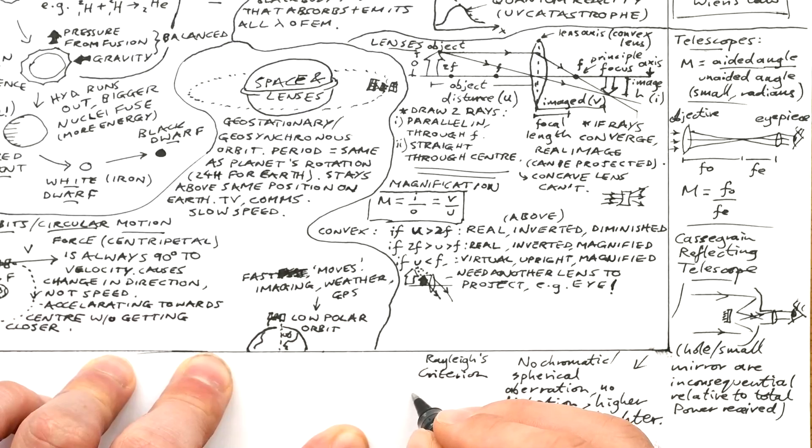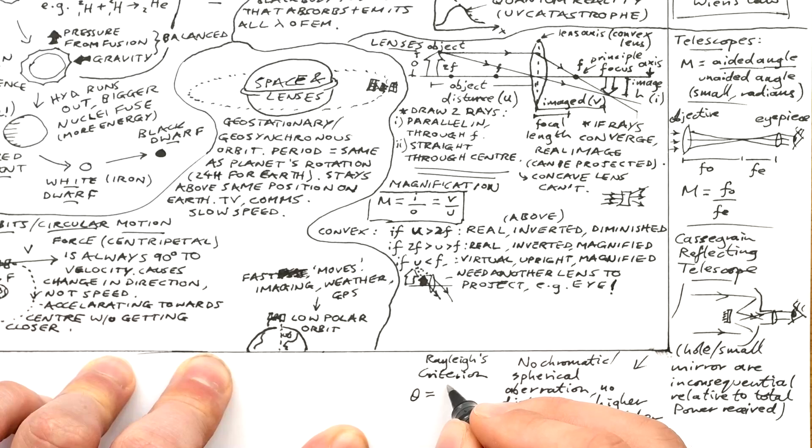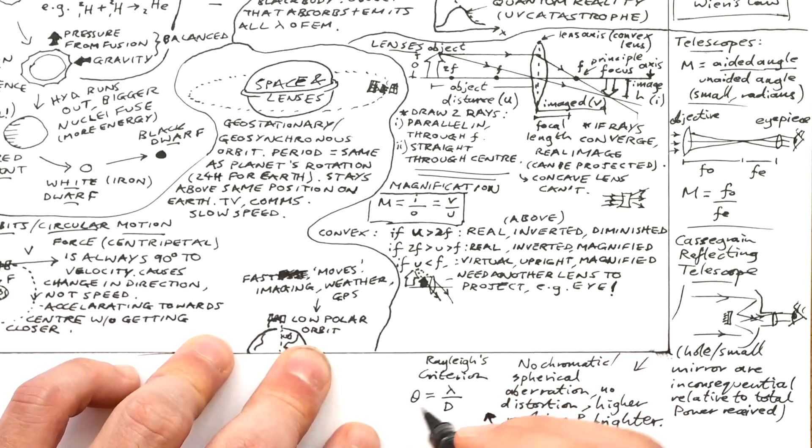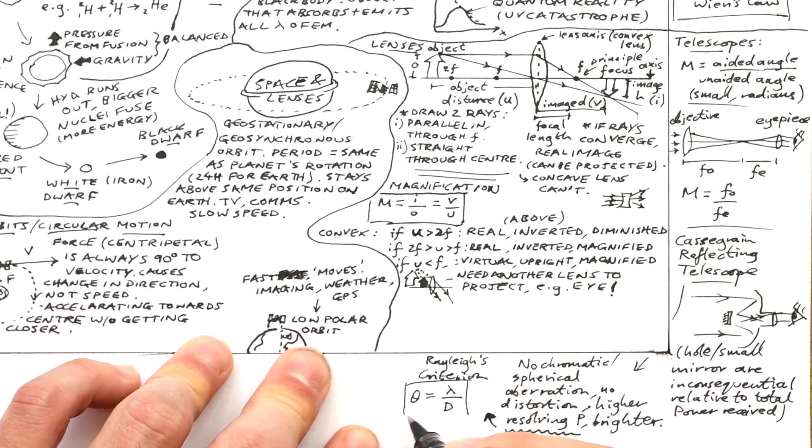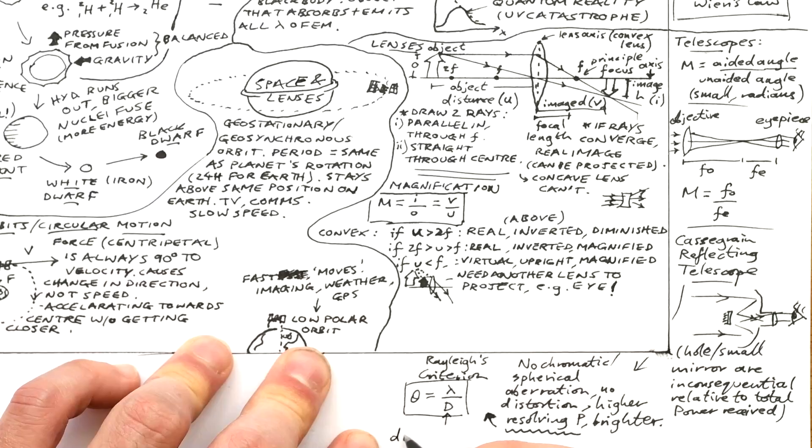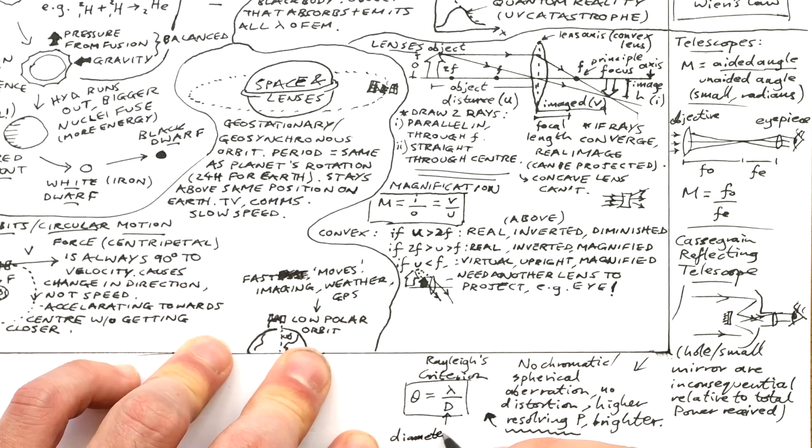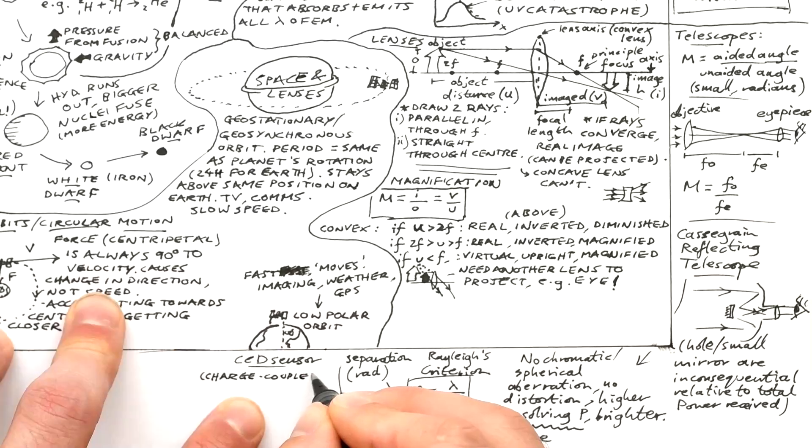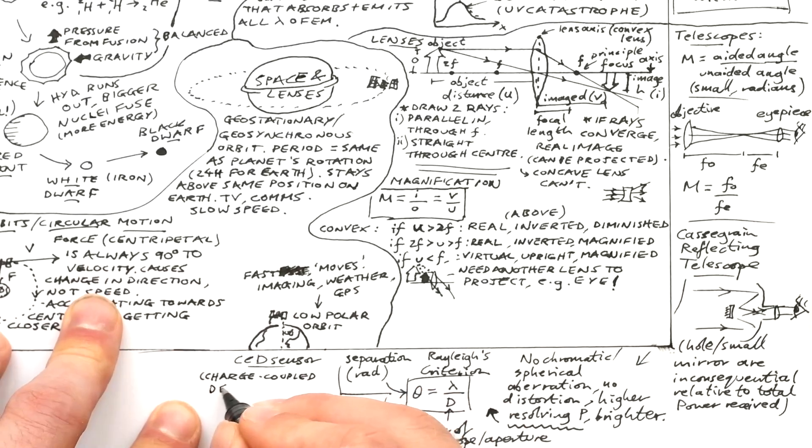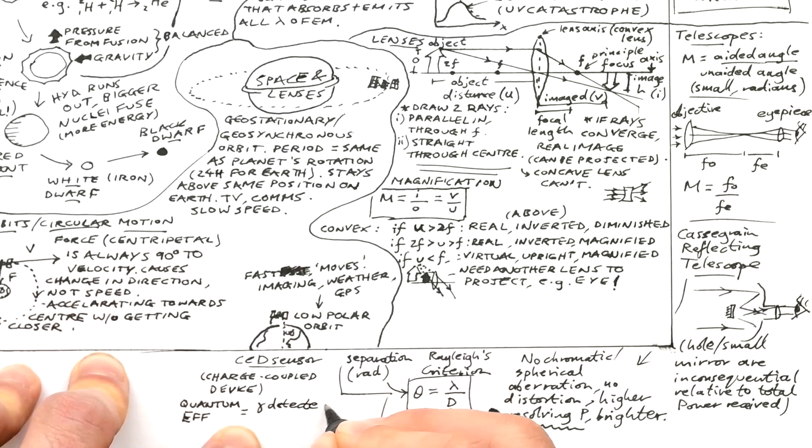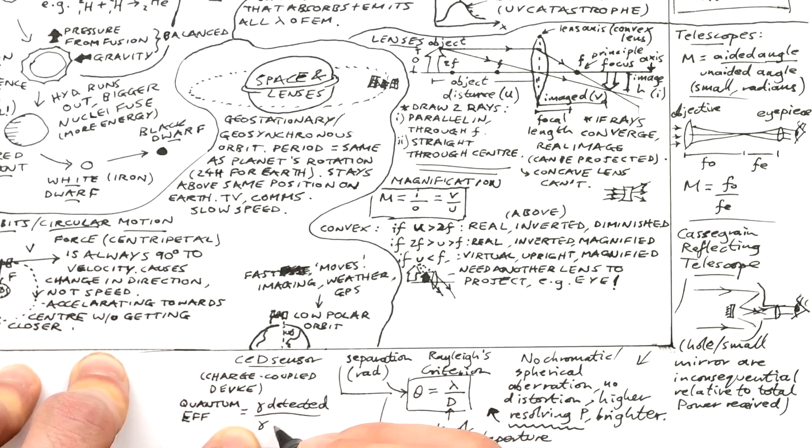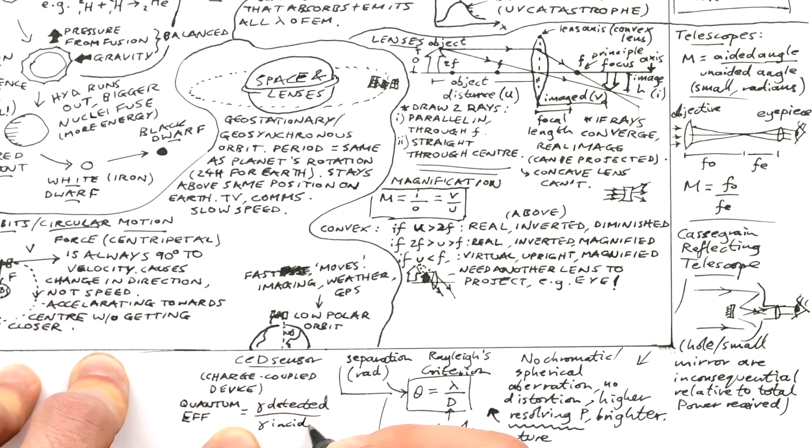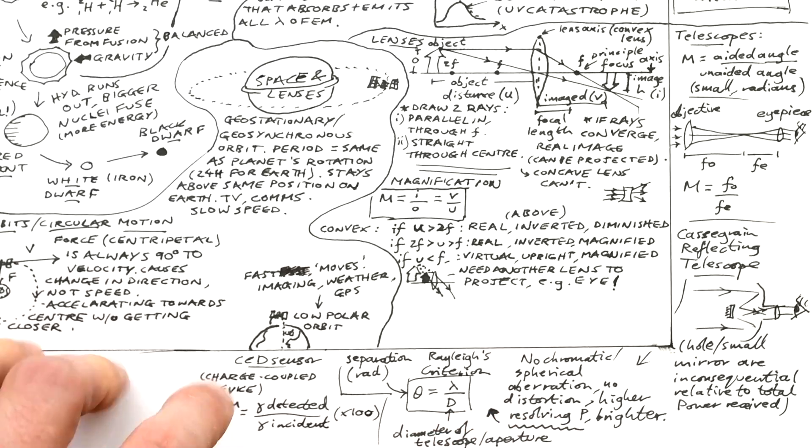Speaking of resolving power this indicates how good a telescope is at distinguishing between two objects. And so we can also think of it as resolution in terms of angles. This is given by Raleigh's criterion. Theta in radians is equal to the wavelength of light divided by the diameter of the telescope or the aperture. That's just the size of the hole that the light goes through. A CCD is a charged couple device and that's the sensor that we have in well pretty much everything nowadays. Quantum efficiency of a CCD is equal to the number of photons detected compared to the number of photons going into it. Number of photons incident and then times by 100.